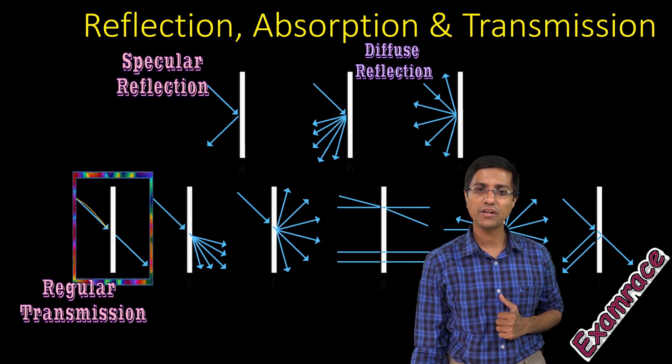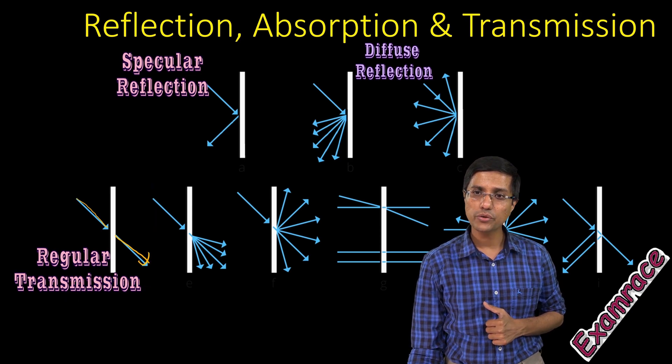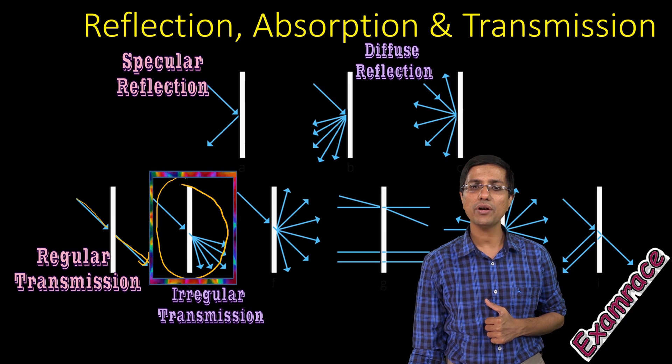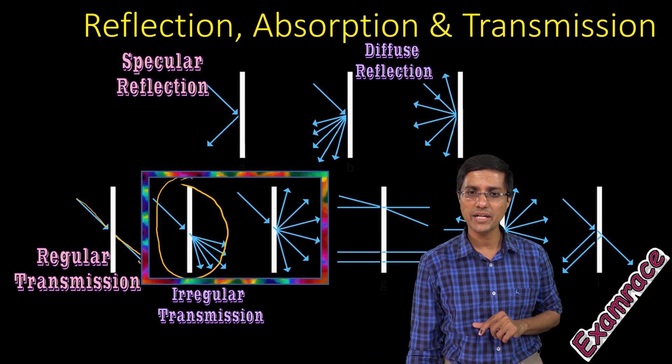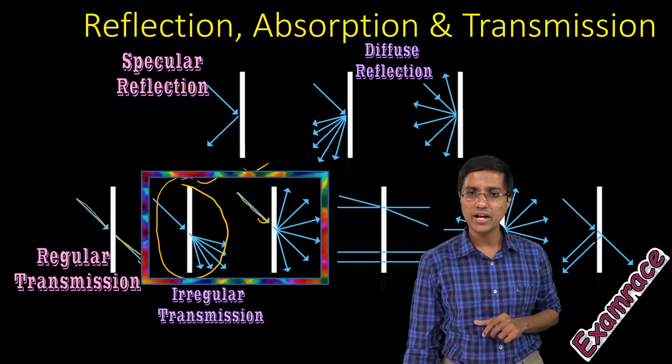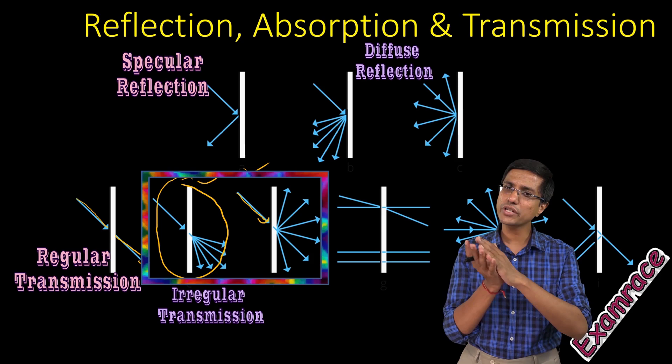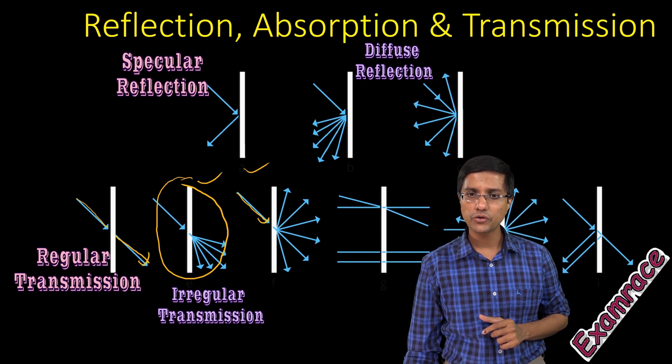This is transmission. So light is coming from here and this slab of glass is just allowing it to pass through. This is also a case of transmission but this is diffused or scattered transmission. So in this case of transmission, although the light which is coming in—both this and this is coming in straight—while it is going out, it is scattered or diffused in all directions. So transmission is happening but it is diffused or scattered transmission.